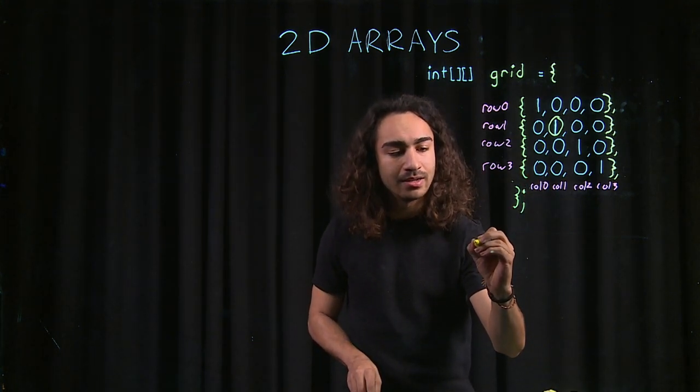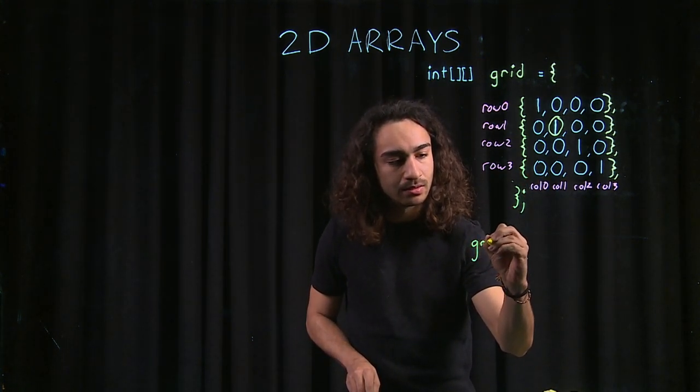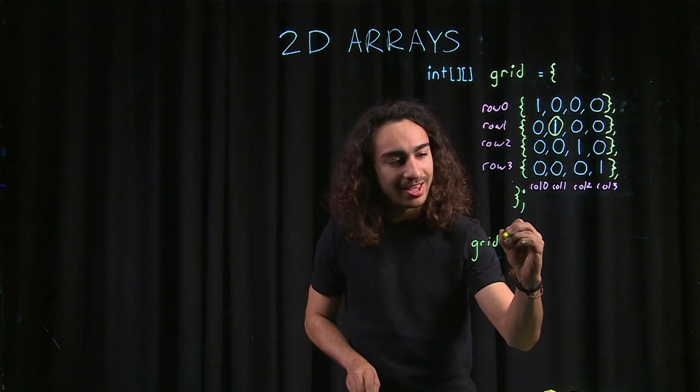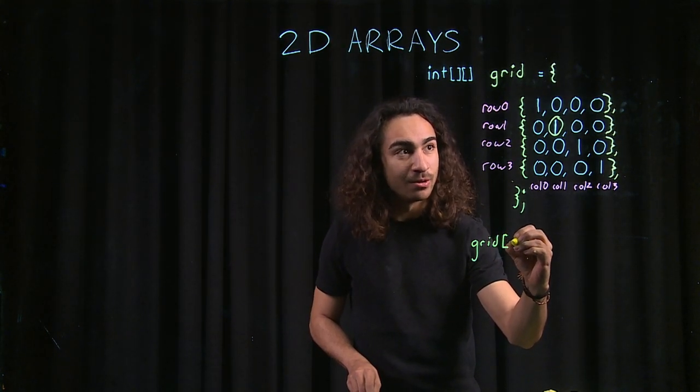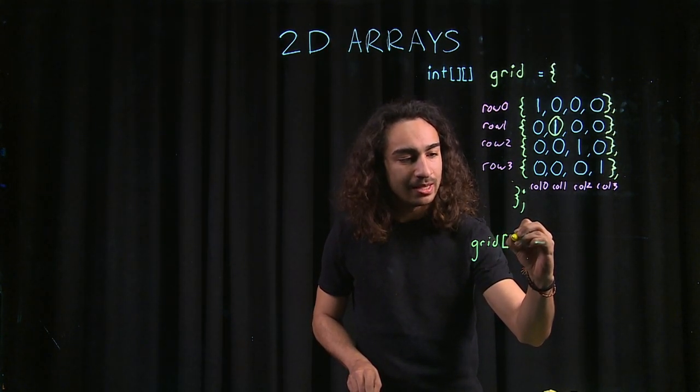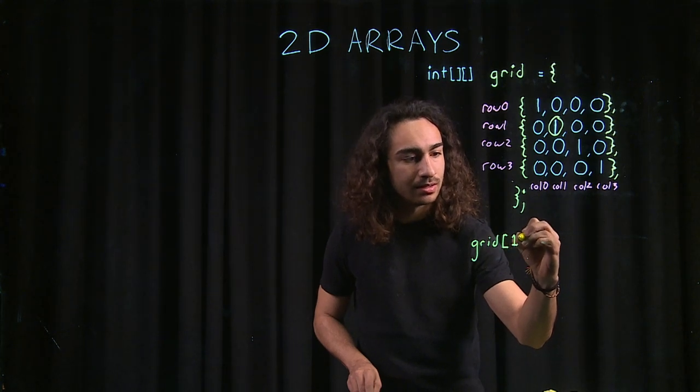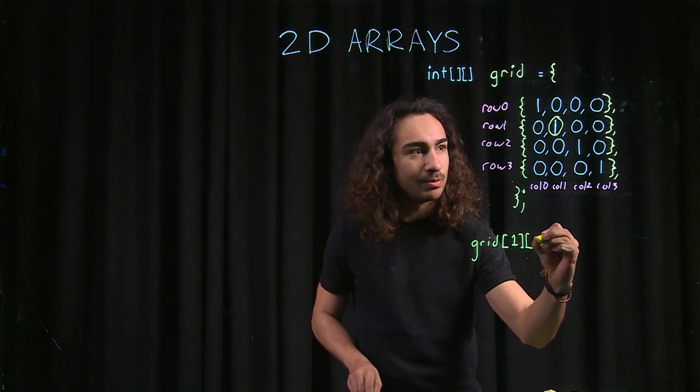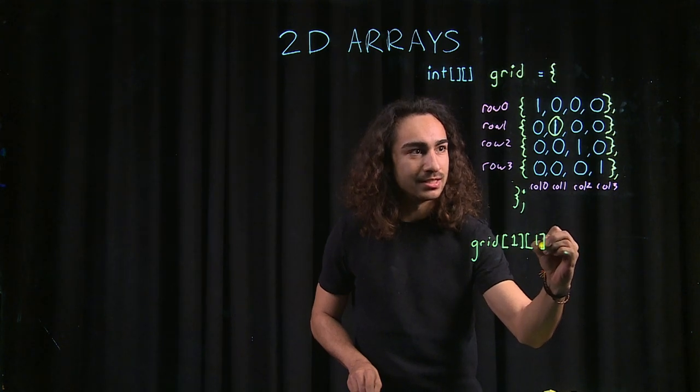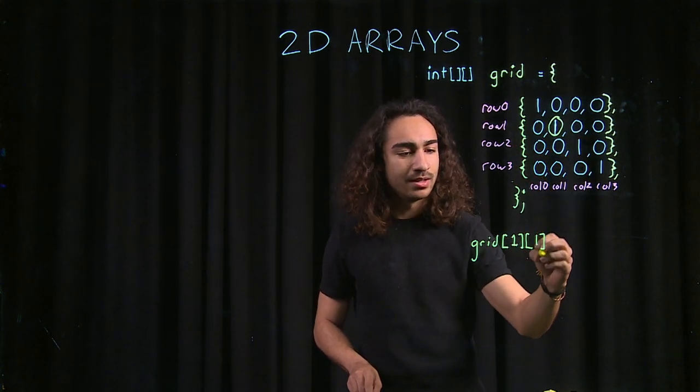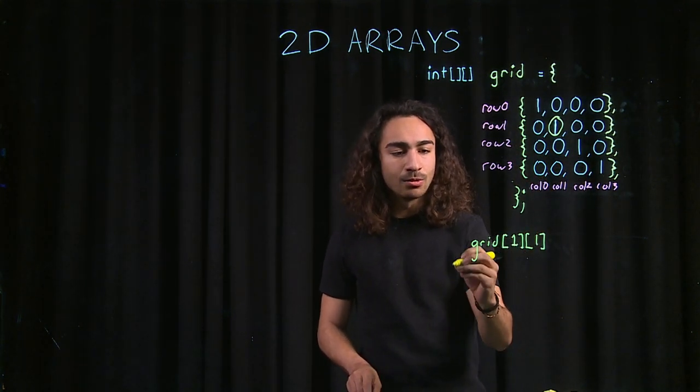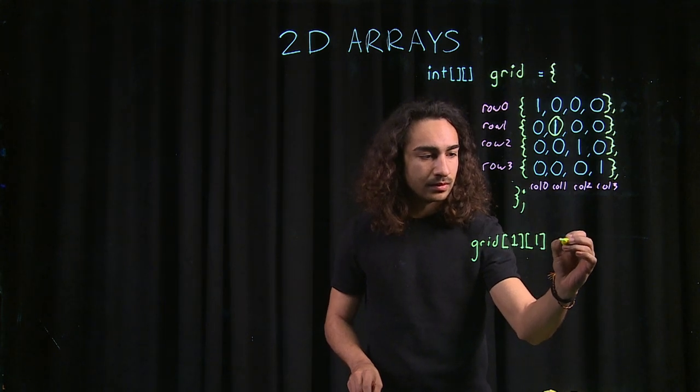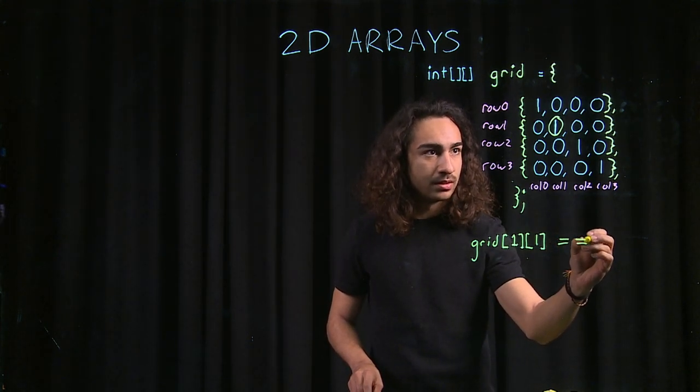So, we do that by calling grid, and then in the first bracket, that would be our rows, we would say we want 1. And in our second bracket, we would say we want also 1, since it's in row 1, column 1. This would be equal to 1.